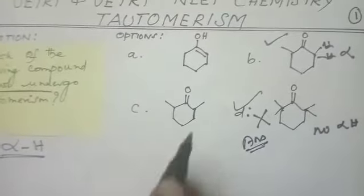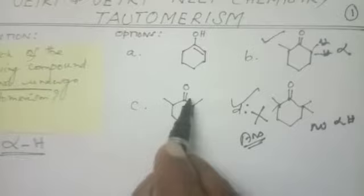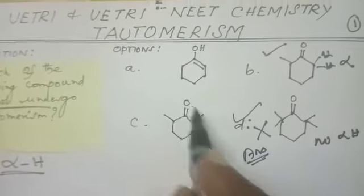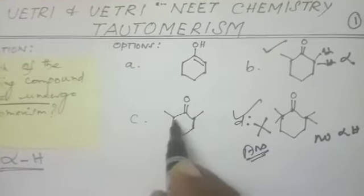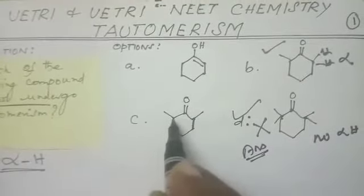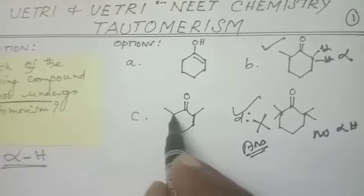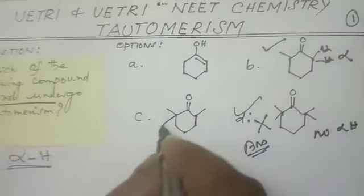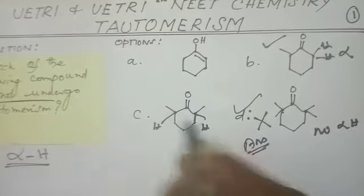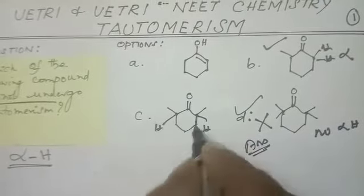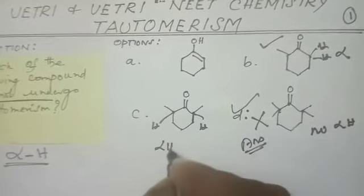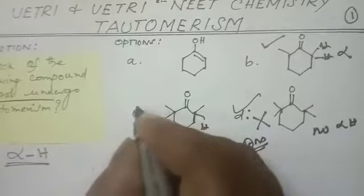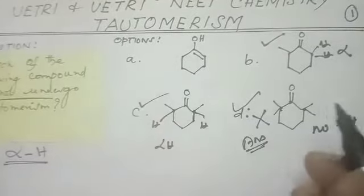Let us see the next compound. Here you are having a double bond — the keto form is there. On both sides you are having a methyl group, but here one more: the fourth valence is balanced by hydrogen. So you are having alpha hydrogen. So it is answering Tautomerism.